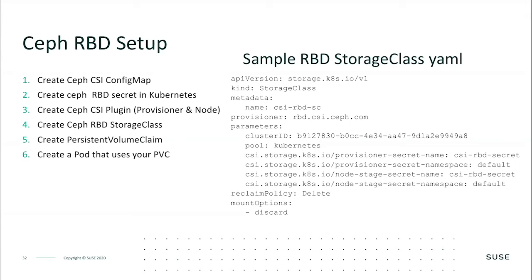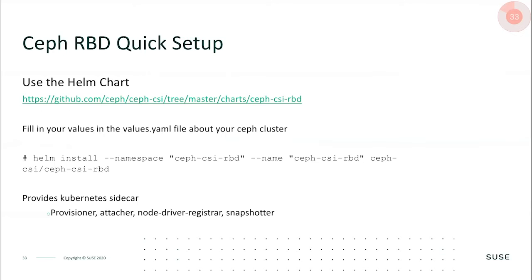For the Ceph RBD setup, there are six basic steps to actually set this up. Here's a sample RBD storage class, which I'll go through and demonstrate in the demonstration video. There's also a quicker setup — if you like fast and easy, pay attention to using Helm charts. Most CSI drivers have a great amount of Helm charts available, making things really easily deployable just by using a values file or extending the values at the end of each Helm install command. You can get them up and running really fast.